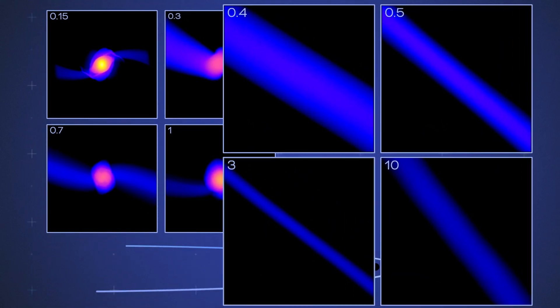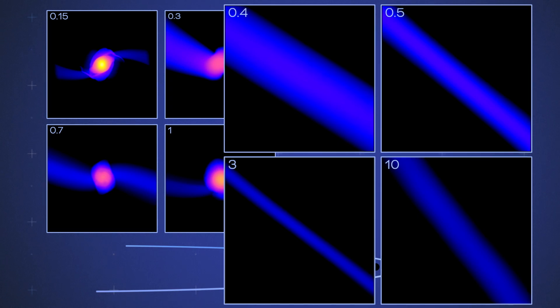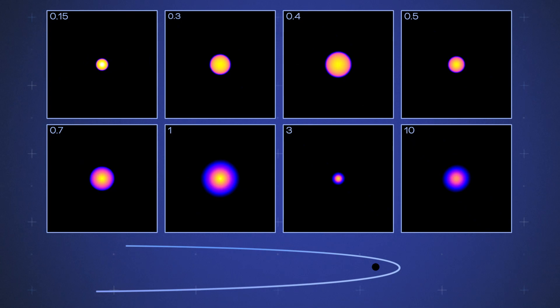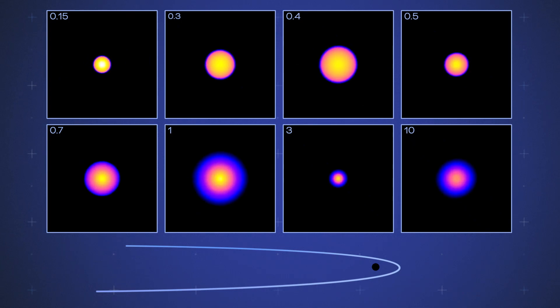But stars with 0.4, 0.5, 3, and 10 times the sun's mass are completely torn apart. The difference between survival and destruction depends on the star's internal density.